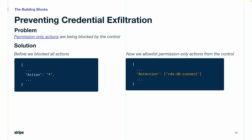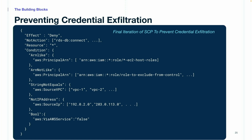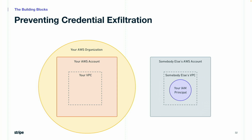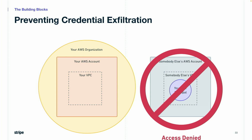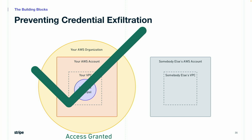When we combine all of the exceptions with the base policy, we get this beautiful monstrosity of an SCP. In human language, this says: deny almost all actions on all resources if it's a role we want to lock down and not a role we want to exclude from the control, and if the request is not made from the expected network — either through a VPC endpoint of one of our trusted VPCs or via one of our trusted IPs — and if it wasn't AWS using the role on our behalf. Now our credentials being used outside of the expected network are denied, and when credentials are used within our network, access is still allowed — we haven't broken all of our services.